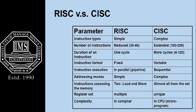RISC uses simple addressing modes whereas CISC, as the name implies, uses complex addressing modes. For memory access instructions, RISC uses load and store instructions, whereas in CISC almost all instructions can access memory.